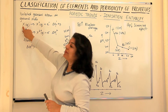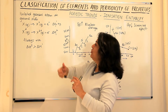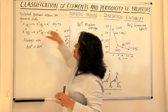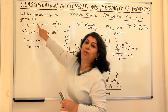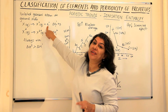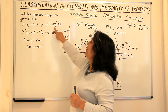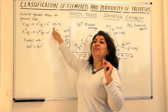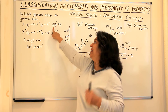If you have an atom X in the gaseous state, isolated, and you use a certain amount of energy Y to remove an electron, you get a cation — a mono-positive cation having a single positive charge — and an electron is released. The energy required to remove this electron is known as the ionization enthalpy, and since we are removing the first electron from the atom, it is also called the first ionization enthalpy.